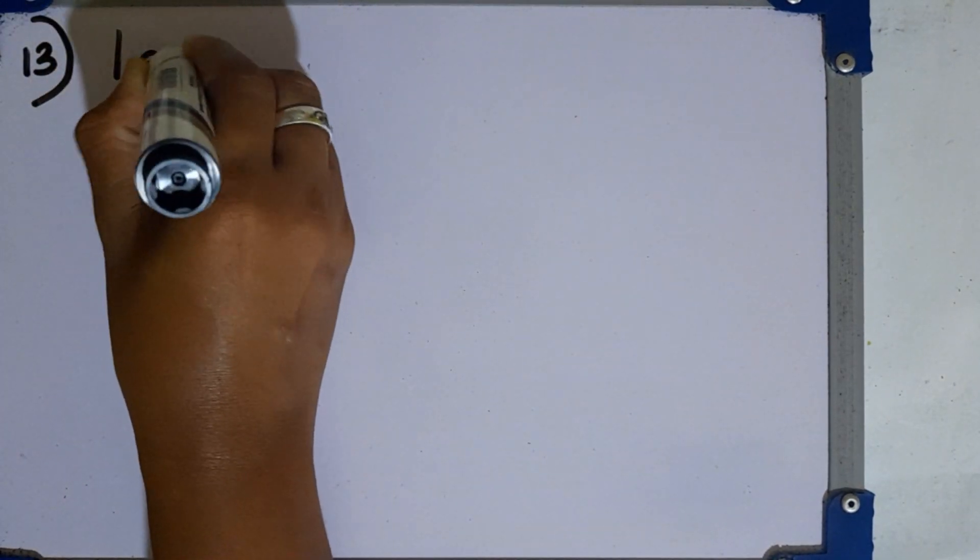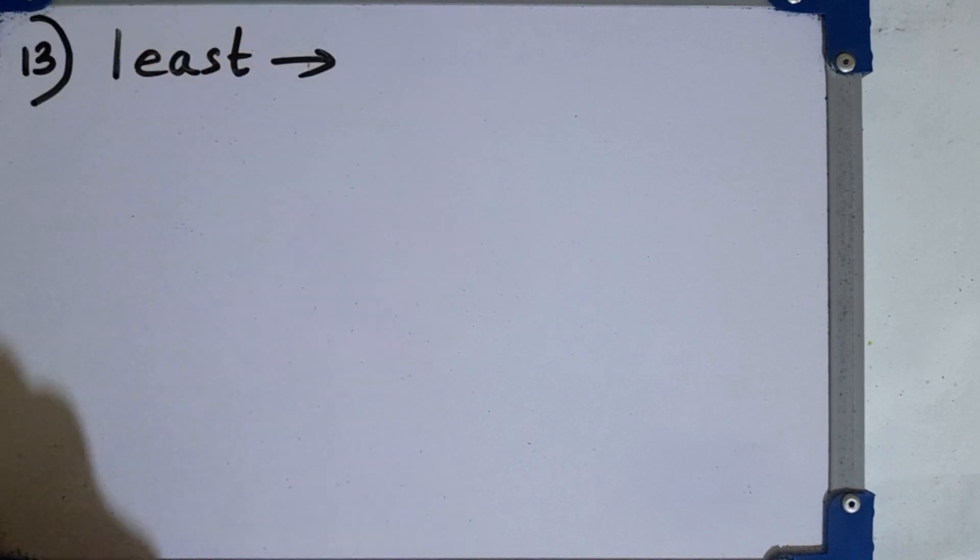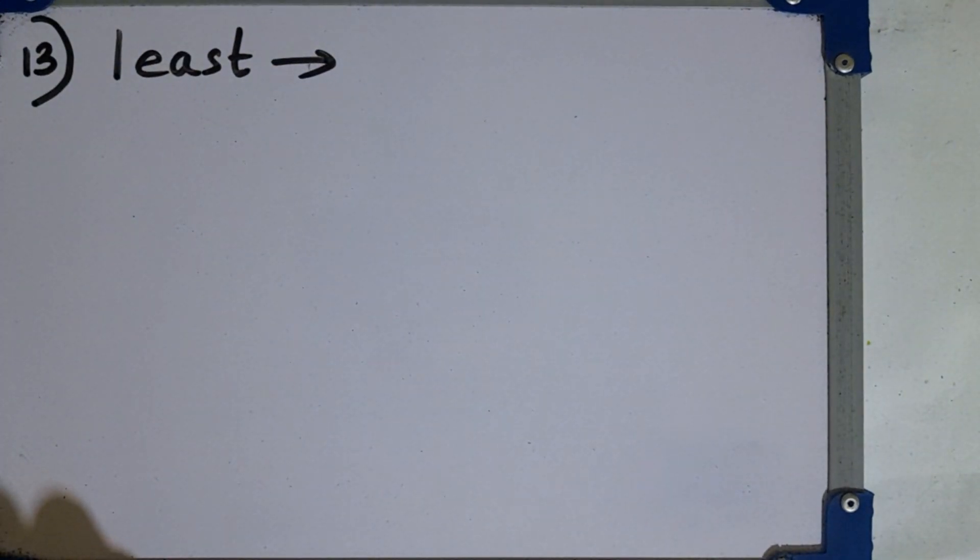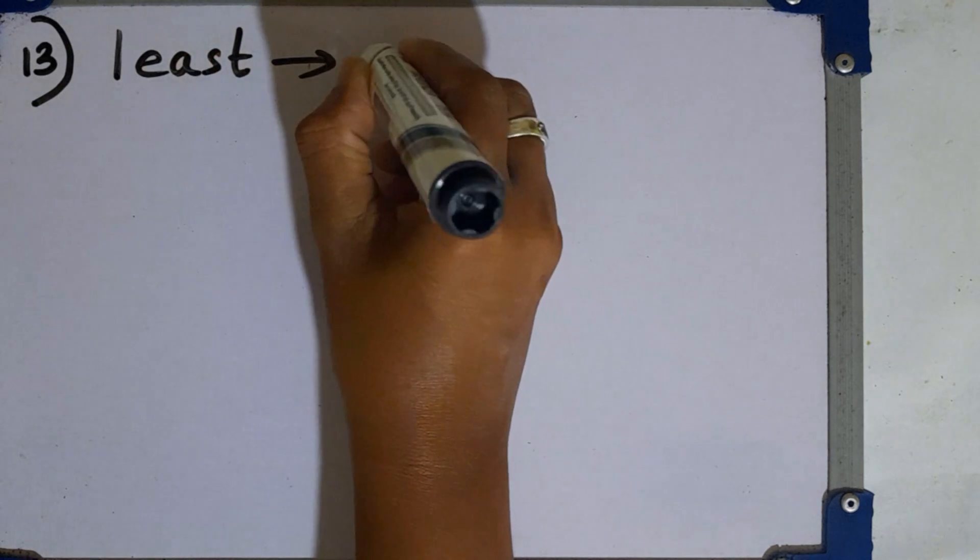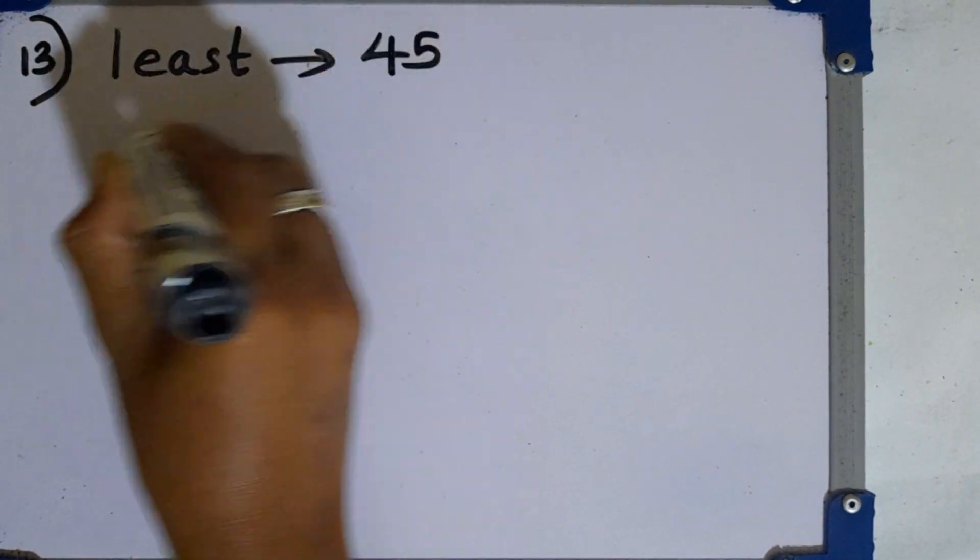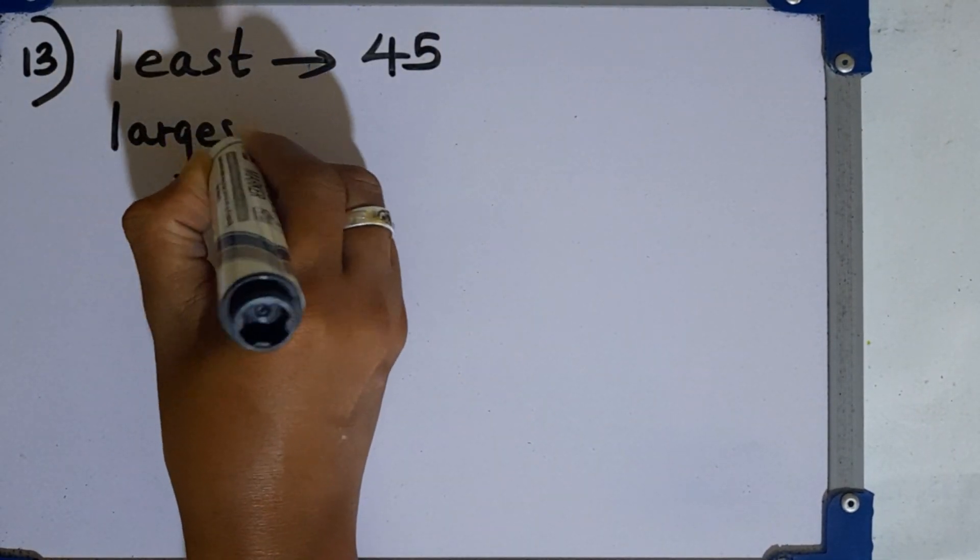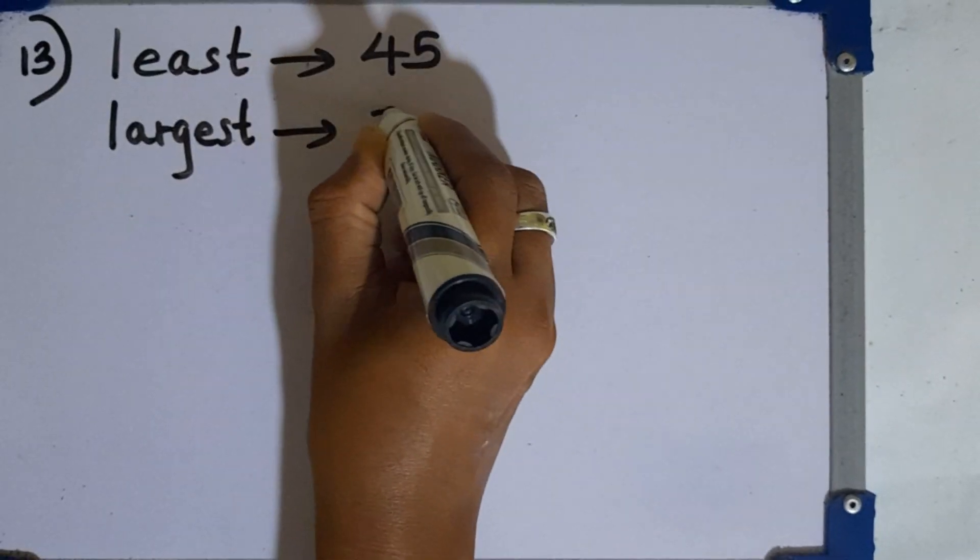Question number 13. When a certain number is rounded off to the nearest multiple of 10 the value obtained is 50. Write the least number and the largest number that this number can take. Least number should be 45 if it is rounded off to 50. Then largest one should be 54.